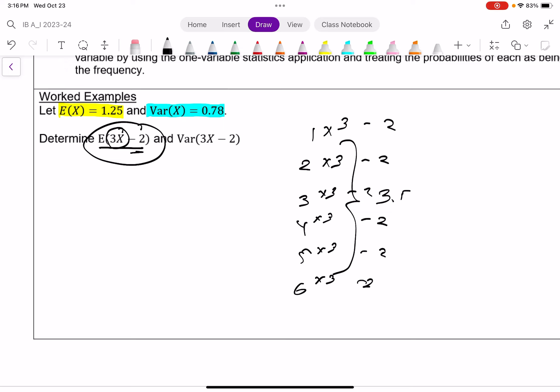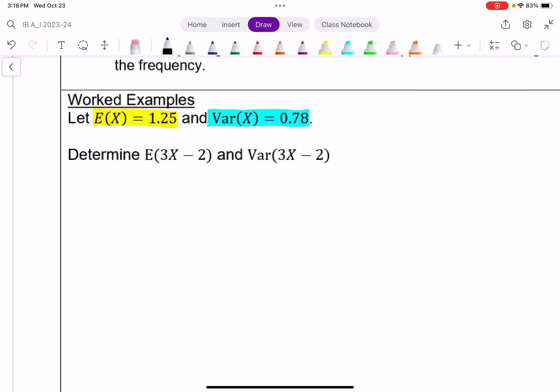So in that case, instead of my outcomes being 1, 2, 3, 4, 5, 6, there would be 3 minus 2 is 1, 6 minus 2 is 4, 9 minus 2 is 7, and so on. And these would be my new possible outcomes. How would that change my expected value? For expected value, it's quite pleasant, actually. The expected value of 3X minus 2 is the same as just 3 times the expected value of X take away 2. Since we know this is 1.25, this will just be 3 times 1.25 take away 2, which is 1.75.